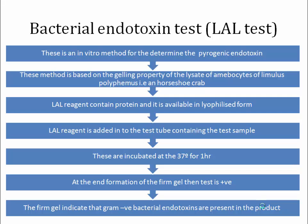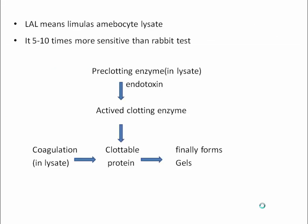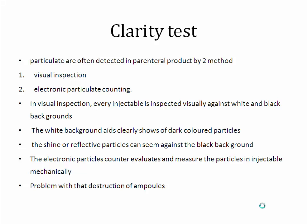If a firm gel is formed at the end, the test is positive, confirming the presence of bacterial endotoxin. The mechanism involves a pre-clotting enzyme present in the lysate which, upon contact with endotoxin, activates the clotting enzyme. Coagulation then occurs — the LAL reagent protein forms a clottable protein — and finally a gel is formed.